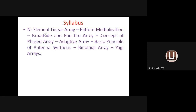We extended to the N-element linear uniform array — similar elements placed in a straight line with equal amplitude and equal phase. We derived the total electric field strength at distant point P and calculated the array factor. From the array factor applied to broadside and end-fire arrays, we obtained five parameters: maxima direction, null point, secondary maxima, beam width, and directivity.